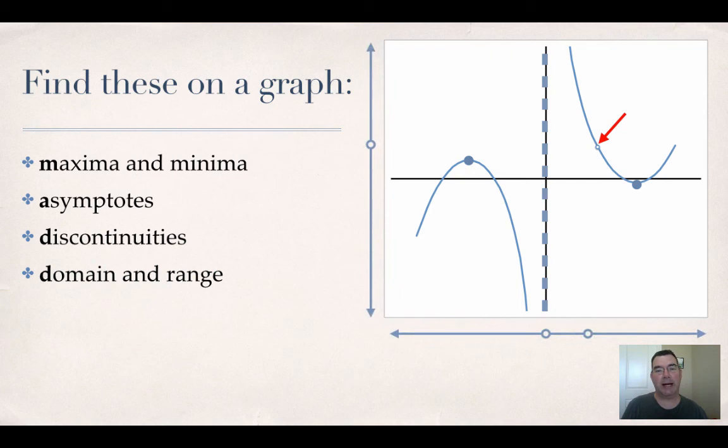Where your domain and range is - any x's that won't be on the graph and any y's that won't be on the graph. Any intercepts you have, so your x-intercepts and y-intercepts if you have them.